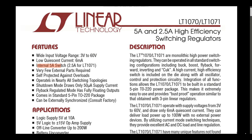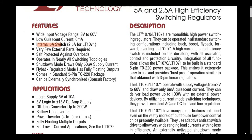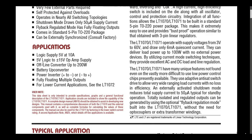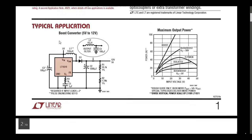The IC is self-protected against overload, and in shutdown mode it draws only 50 microamperes of supply current. The flyback regulator mode has fully floating outputs. It supports 5V logic supply up to ±15V op-amp supply designs, and you can also design an offline converter up to 200 watts using this switching regulator.